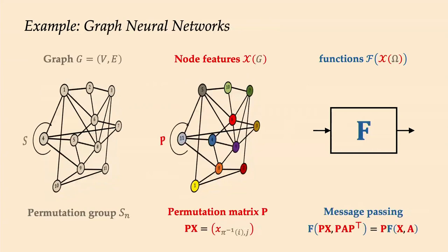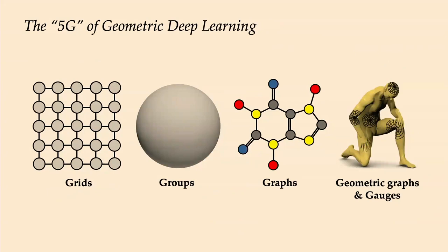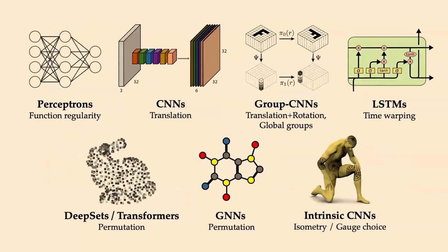Graph neural networks are another example where the domain is a graph and the associated symmetry is the permutation or reordering of nodes, reflecting the fact that graphs typically have no canonical node ordering. These ideas apply to many domains — graphs, sets, homogeneous spaces, manifolds — and most practical deep learning architectures can be derived this way. This blueprint has already produced generalizations like equivariant graph neural networks, now very commonly used in computational chemistry.